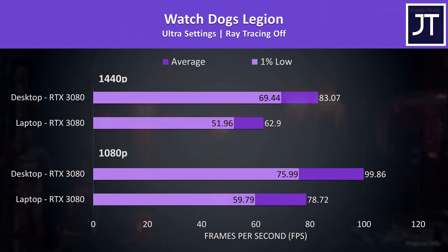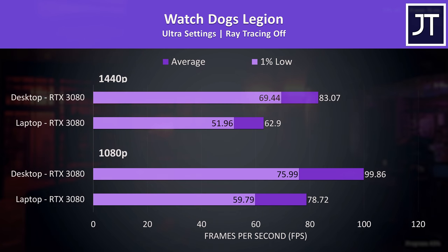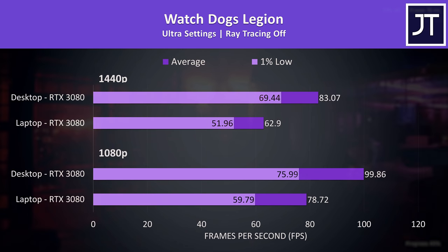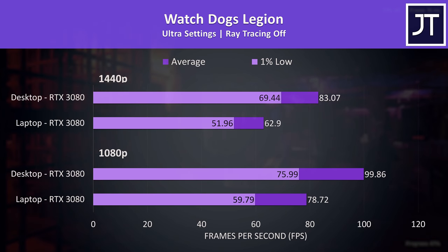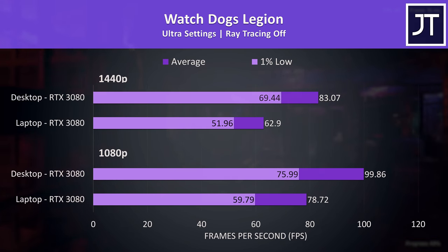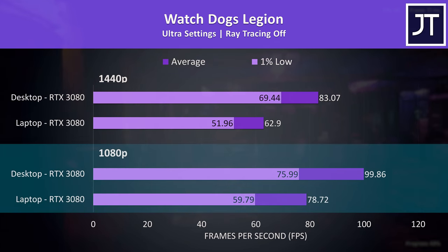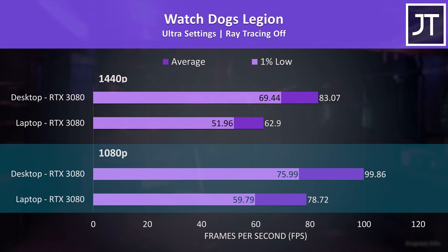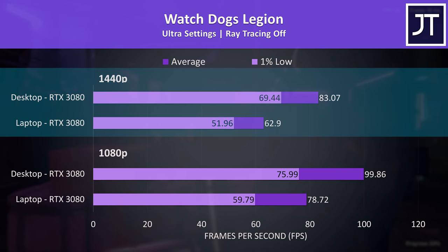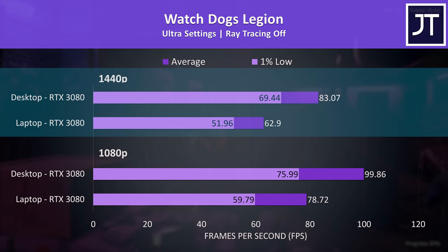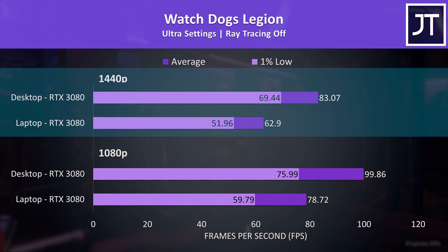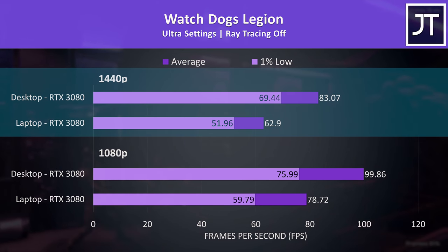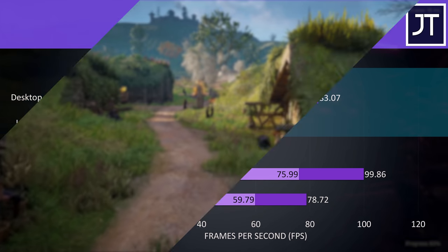Watch Dogs Legion was also tested with the game's benchmark, but had some of the smallest differences between the two systems out of all games tested. At 1080p the desktop was 27% ahead of the laptop — the smallest of all differences — and was then 32% faster at the higher 1440p resolution, where the 1% low from the desktop was still higher than the laptop's average frame rate.